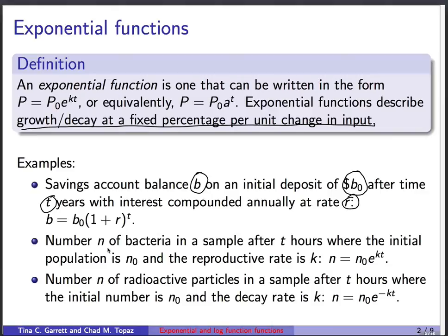Here's another example. The number n of bacteria in a sample after t hours, where the initial population is n₀ and the reproductive rate is k, can be described as n = n₀e^(kt). The number n of radioactive particles in a sample after t hours, where the initial number is n₀ and the decay rate is k: n = n₀e^(-kt). So this is exponential growth, this is exponential decay. We're assuming k is a positive number.